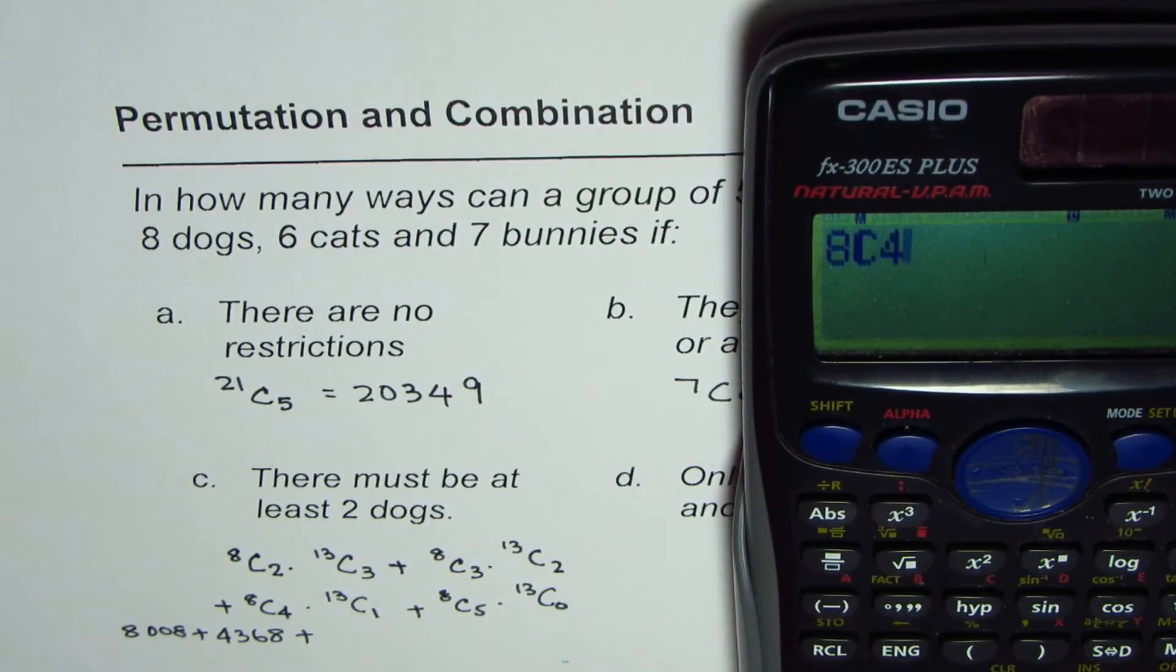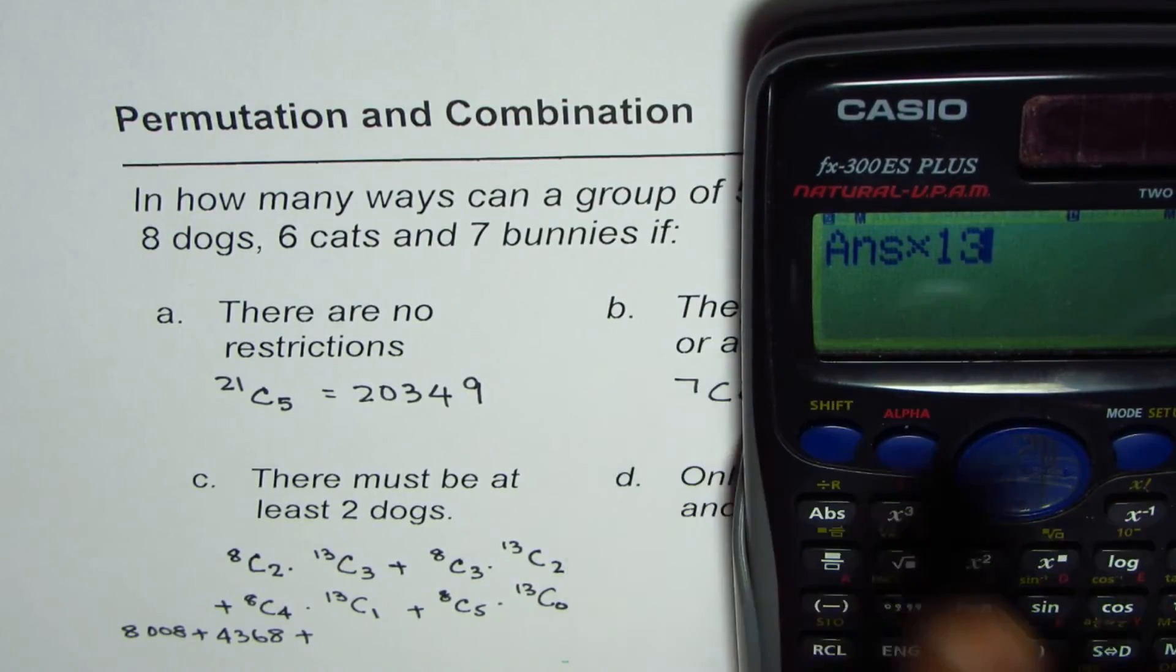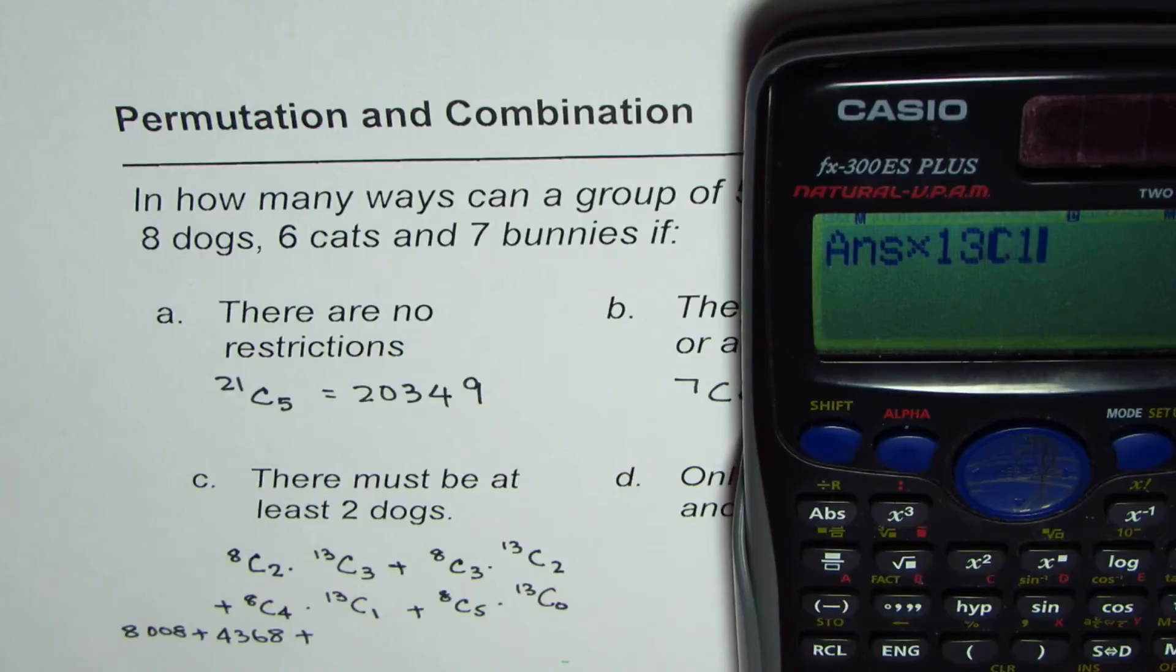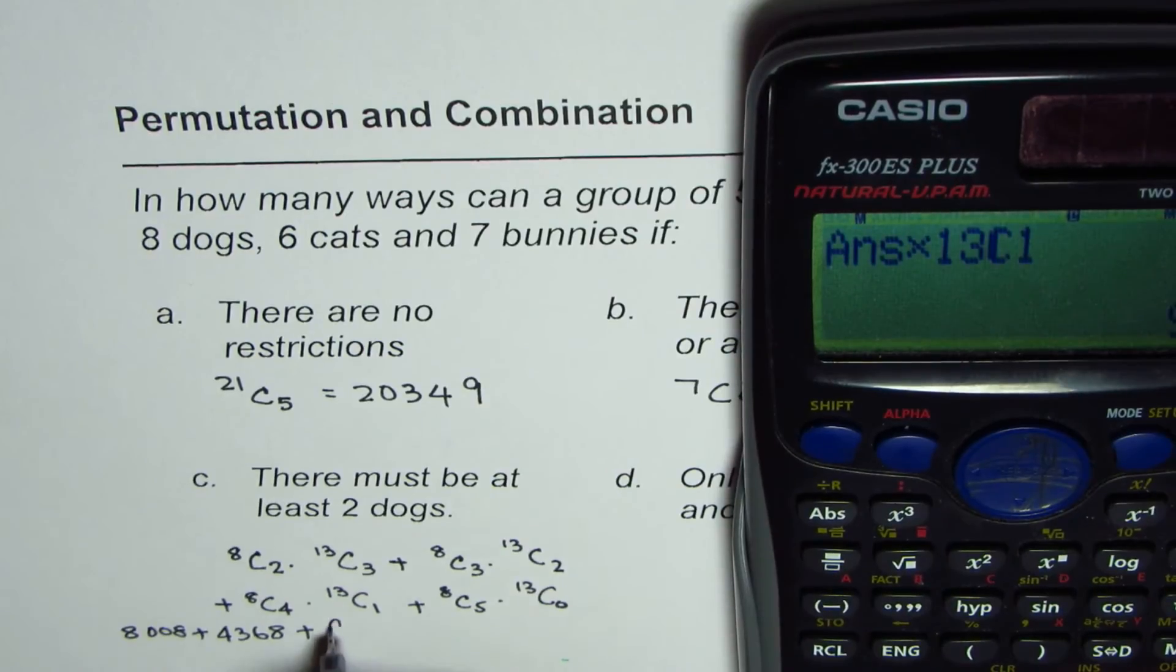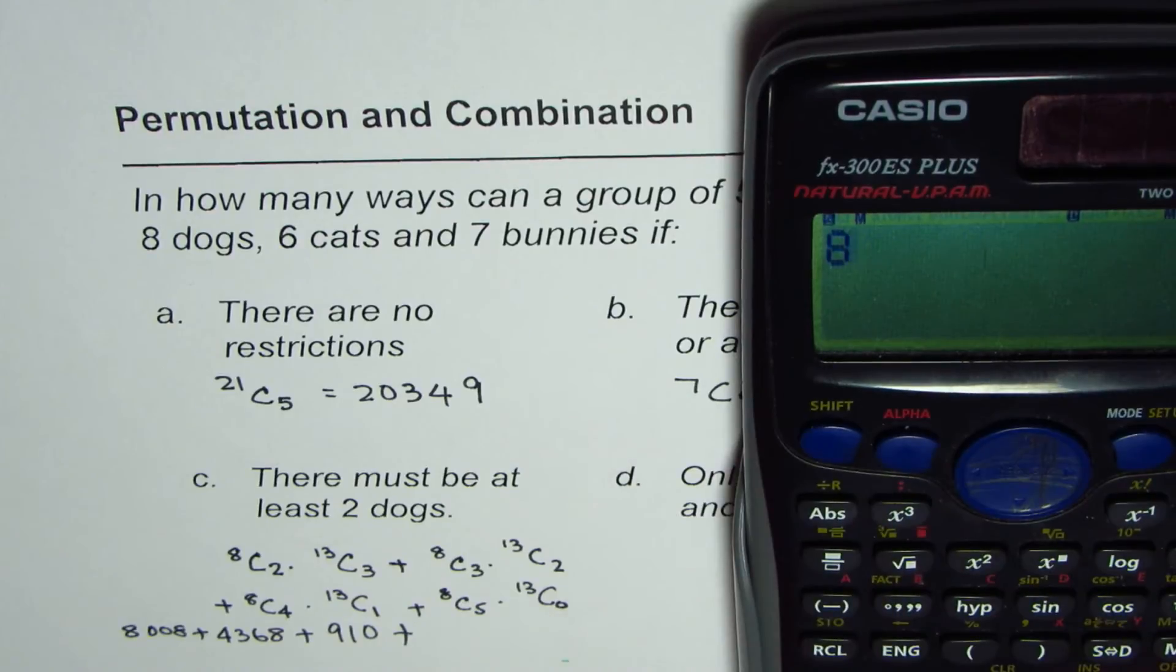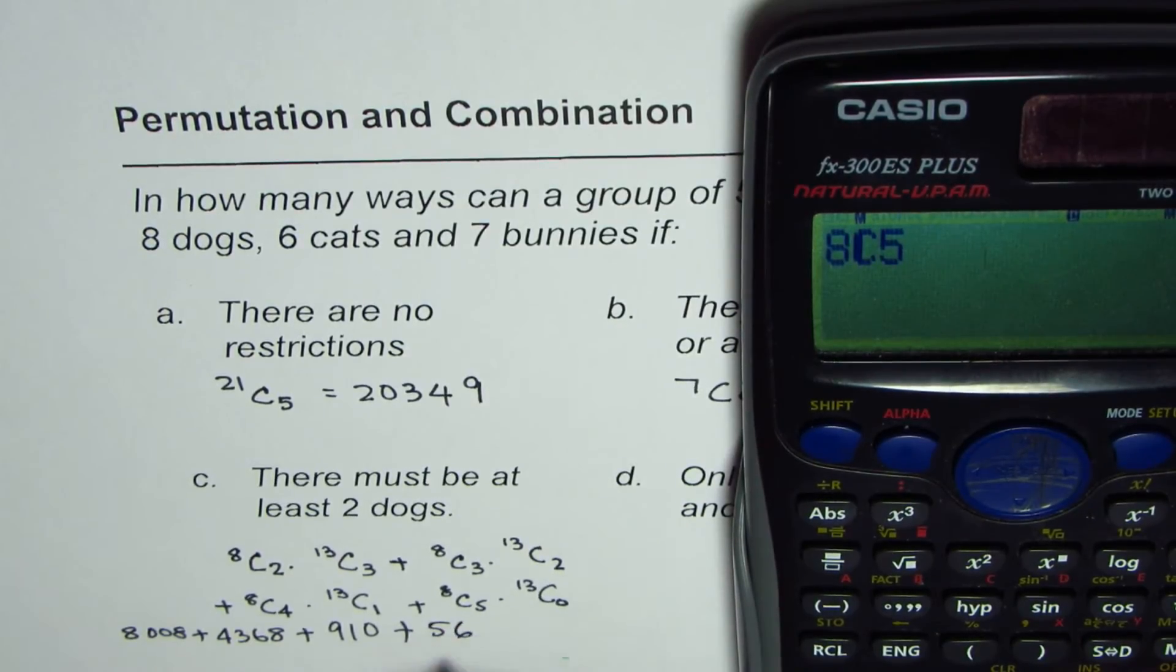8008 plus we have 8C3 times 13C2 and that equals to 4368 plus 8C4. So we have 8C4 times 13C1 that is 910 plus 8C5 and that is 56. Times this is 1 so it gets 56.